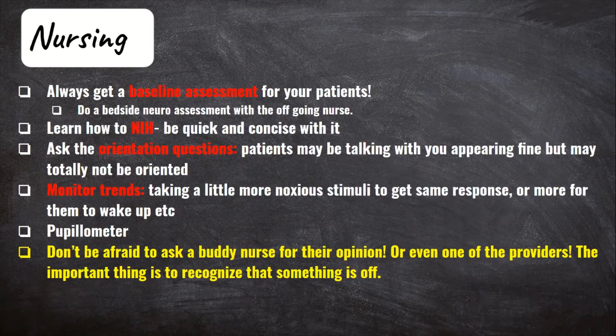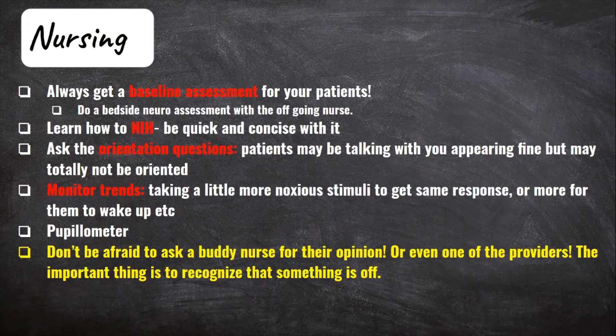Remember that time is brain. Learn how to do an NIH assessment — go to the website provided in the description or use whatever your facility has, and get really good with it. Finally, and this may be the most important tip for neuro patients or any patient: don't be afraid to ask another nurse or provider for their opinion. If you feel that something is off but can't quite figure it out, don't hesitate to ask for assistance. Time is brain. The important thing is that you recognize something was off. For neuro patients it's often difficult to know when something has changed, but if you just feel something isn't the same as your baseline assessment, get a buddy nurse or a provider to come look — get that second opinion. It's the best thing you can do for yourself and for your patient.